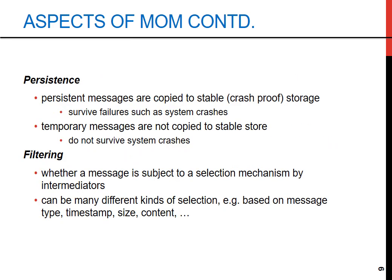Other important aspects of message oriented middleware are persistence and filtering. Persistence determines how messages are stored — in a bank transaction system, persistent messages like transaction records are saved to stable storage to survive system crashes. Temporary messages might be used for chat messages in a live support system that disappear after a session. Filtering allows systems to manage message flow intelligently — for example, a news application that filters updates based on user preferences, such as only sports news for sports enthusiasts. Filters can be applied by message type, timestamp, or other criteria, ensuring consumers receive only relevant information.